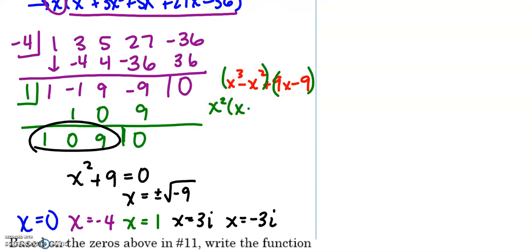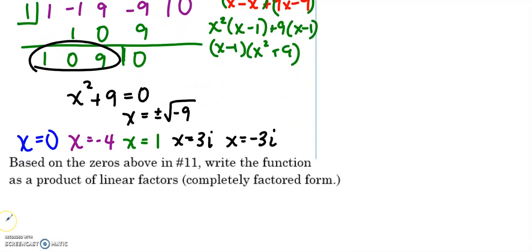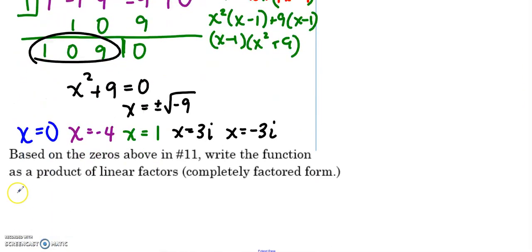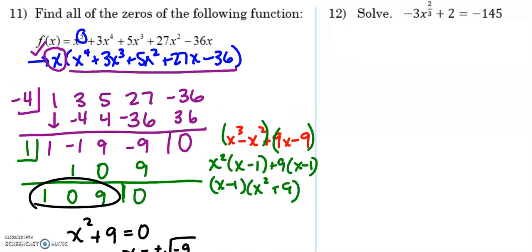Notice if you factored by grouping, you would have gotten the same thing. Take out an x squared. I'm left with x minus 1. Take out a 9. I'm left with x minus 1. So I get x minus 1 and x squared plus 9. Same thing, up to you. All right, so then it says, based off of the 0's, write the function as a product of linear factors. So that means my polynomial, what was it called, f of x? f of x is equal to x times x plus 4 times x minus 1 times x plus 3i and x minus 3i. Notice that because the positive imaginary was a root, its conjugate, the negative imaginary, also must be a root.